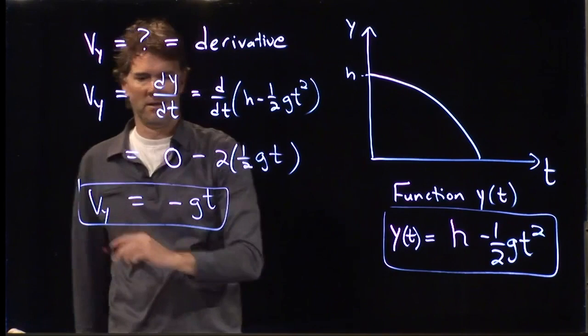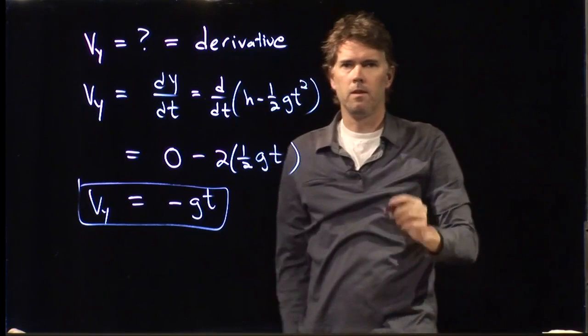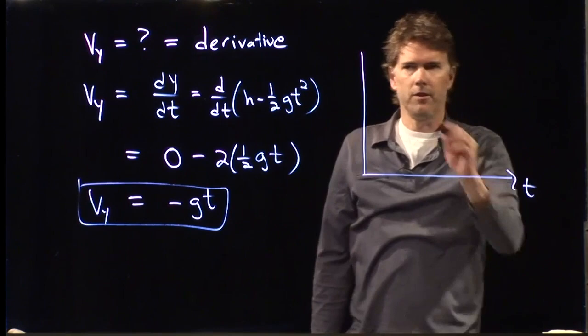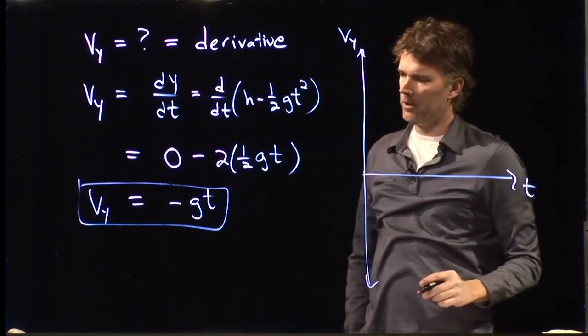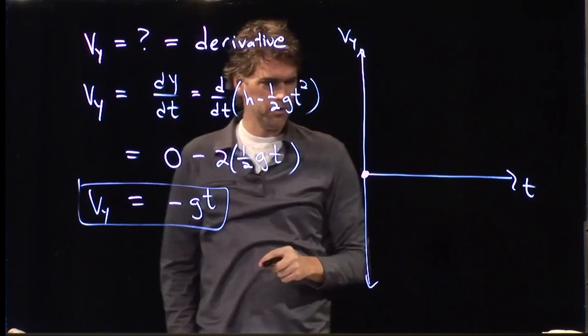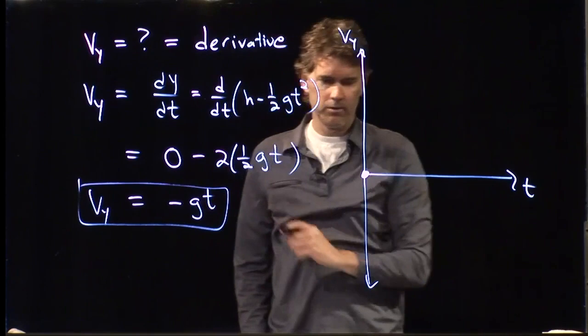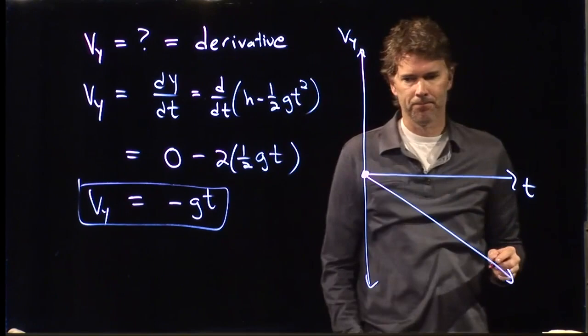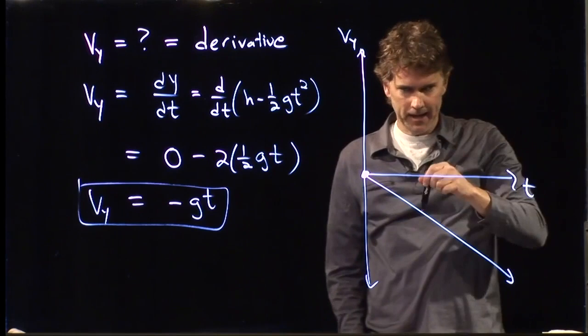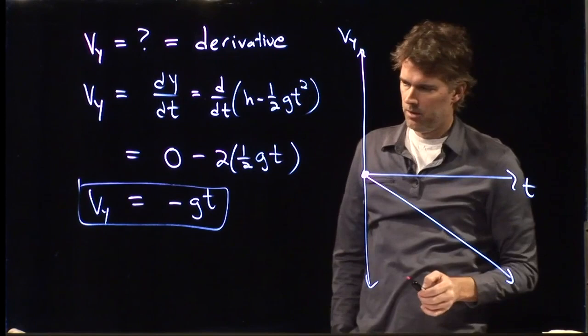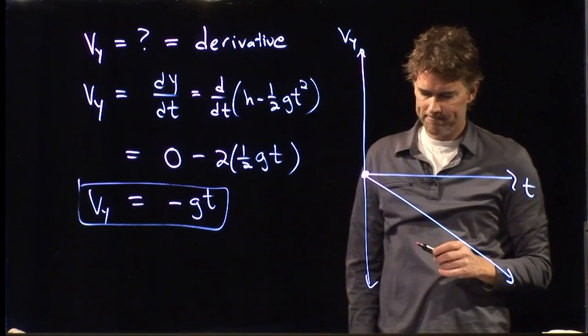If we plot v_y as a function of time, at t equals zero it's going to be zero, and then it is negative and increases linearly with time. Negative means the object is going in the negative y direction — it is falling — and it is increasing in magnitude with a slope given by negative g. That's what v_y looks like as a function of time.